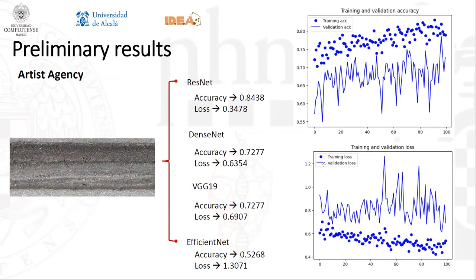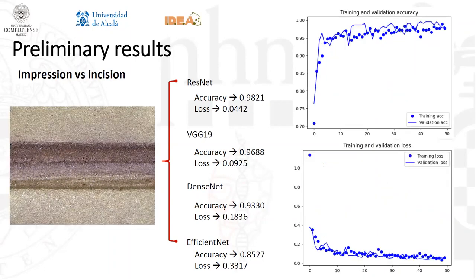The results of these models were as followed, with ResNet being the one scoring a higher accuracy with a better loss value. Furthermore, no overfitting was observed and the model was sufficiently stable to generalize, as seen in the graphs. The results showed that both decorative techniques can be differentiated with a high degree of confidence just using the marks themselves.